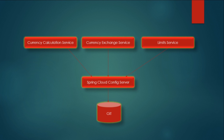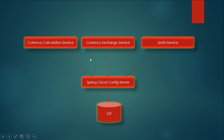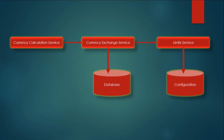All these services will have different environments and all environment properties will be stored in one common location — Git — and everything will talk through the Spring Cloud Config Server. This makes it very easy to maintain environments, because there will be many instances of these microservices and one common configuration place is easy for anyone to maintain. We will also learn how, when changes are made to properties, microservices pick them up automatically.